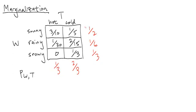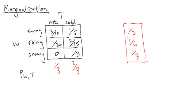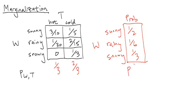It turns out that by doing that, if I take these three numbers here and just move it over, this is actually the probability table for W by itself. Sunny, rainy, snowy — this is the probability table P sub W.